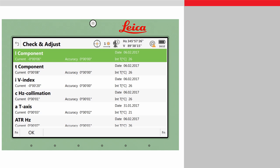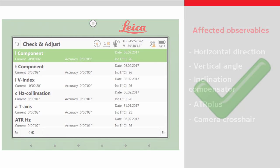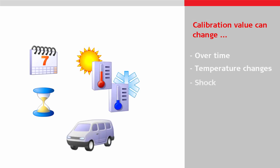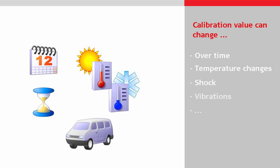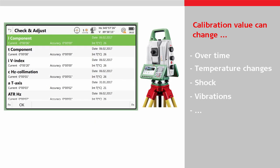At the end of the manufacturing process, any instrument errors are carefully determined and adjusted so that the measurement results are correct and reliable. Over time, stress due to temperature changes, shock, vibrations, etc. means that the errors and therefore the correction values have to be redetermined from time to time to guarantee the best measurement performance.